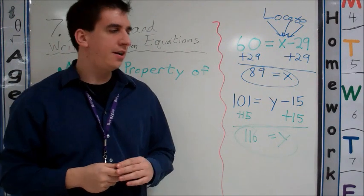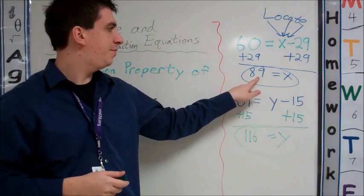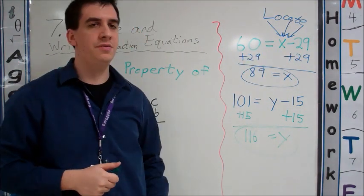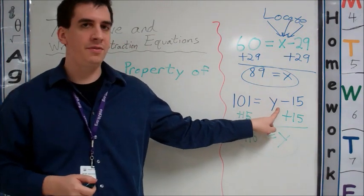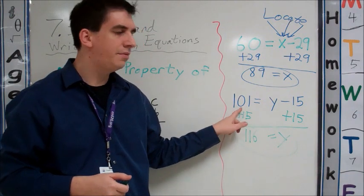If we're ever asked to check our equations, we can go ahead and substitute back in. For example, up here, 89 minus 29 is 60, so we did that one correctly. Down here, 116—we'll substitute it in for Y—116 minus 15 is 101.